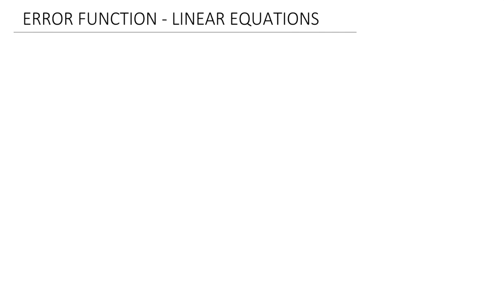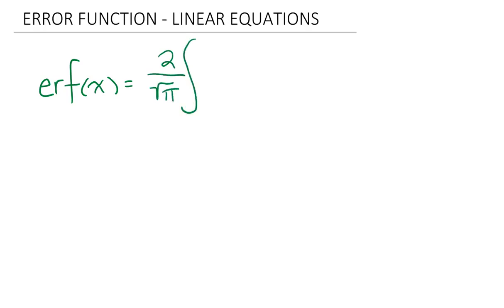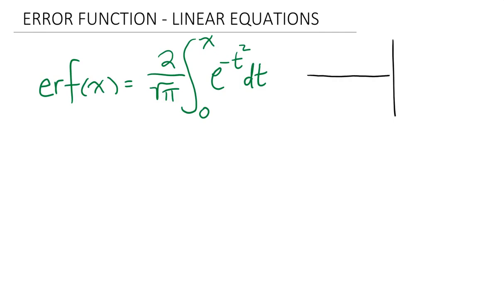We use three letters to denote it. It is ERF — error function of x — and this is equal to 2 over the square root of pi times the integral from 0 to x of e to the minus t squared dt. It's important that we realize that this is a function of x and not of t. I will draw the function e to the minus t squared here, and this is with respect to t on the x-axis.